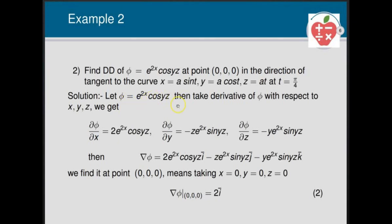Computing the partial derivatives of φ = 5e^(2x) cos(yz): ∂φ/∂x = 2e^(2x) cos(yz), ∂φ/∂y = −ze^(2x) sin(yz), ∂φ/∂z = −ye^(2x) sin(yz). So grad φ = 2e^(2x) cos(yz) i − ze^(2x) sin(yz) j − ye^(2x) sin(yz) k. At (0, 0, 0): cos(0) = 1, e⁰ = 1, sin(0) = 0, so grad φ = 2i.